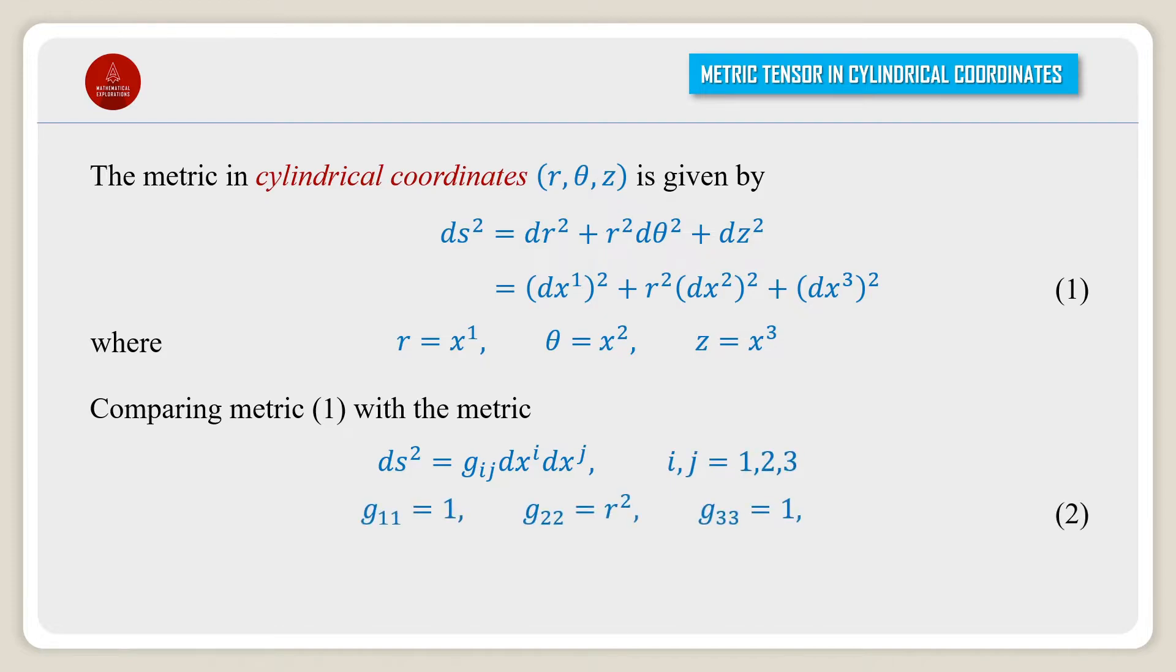Where r = x¹, theta = x², and z = x³. Comparing metric (1) with the metric ds² = g_ij dx^i dx^j, where i and j varies from 1 to 3, we get g_11 = 1, g_22 = r², and g_33 = 1, and g_ij = 0 when i is not equal to j.